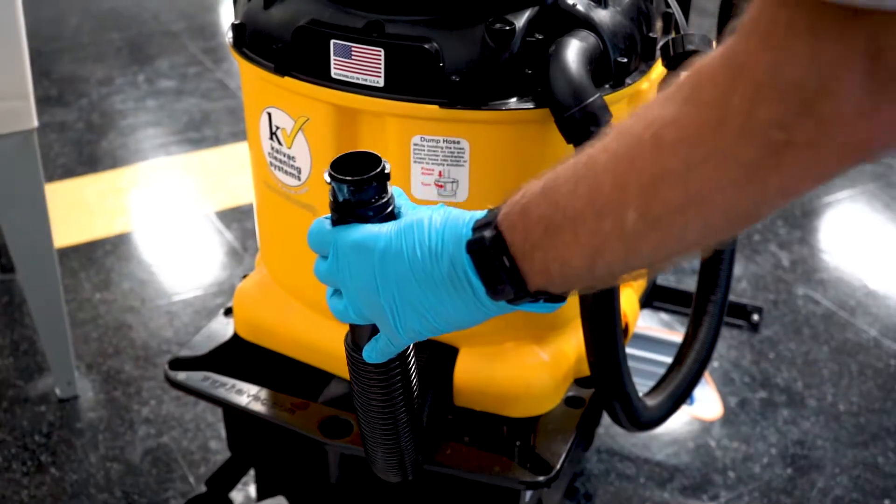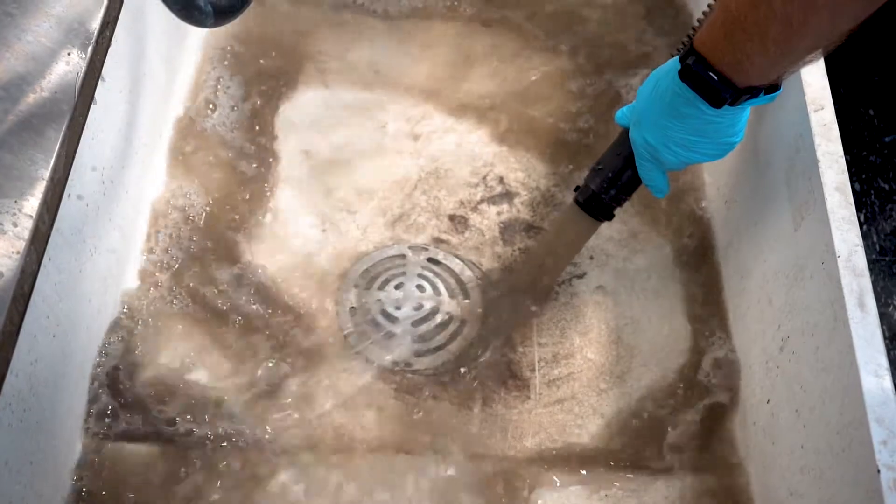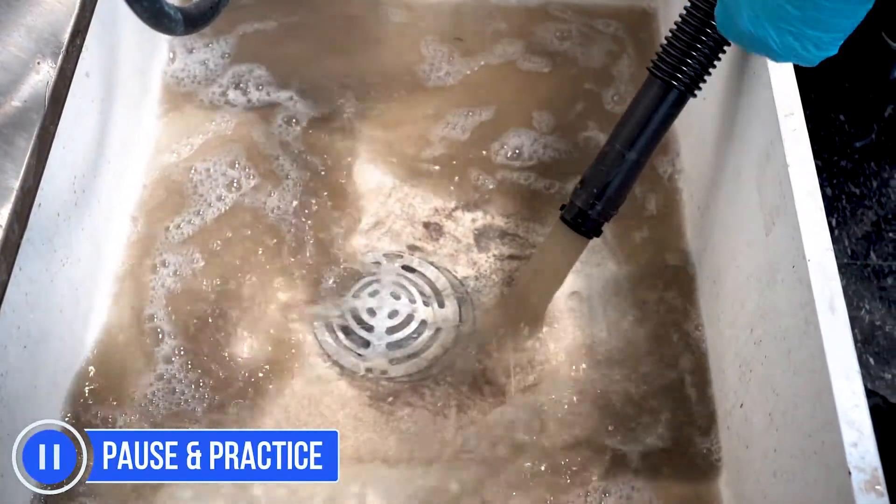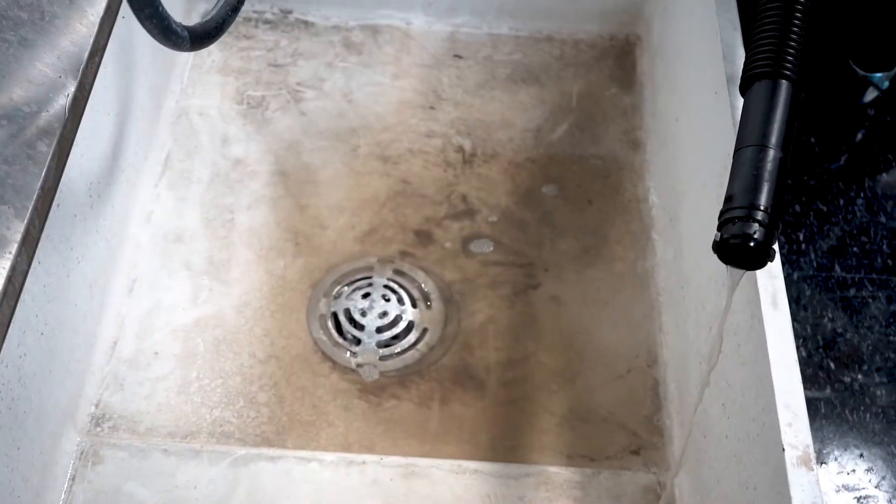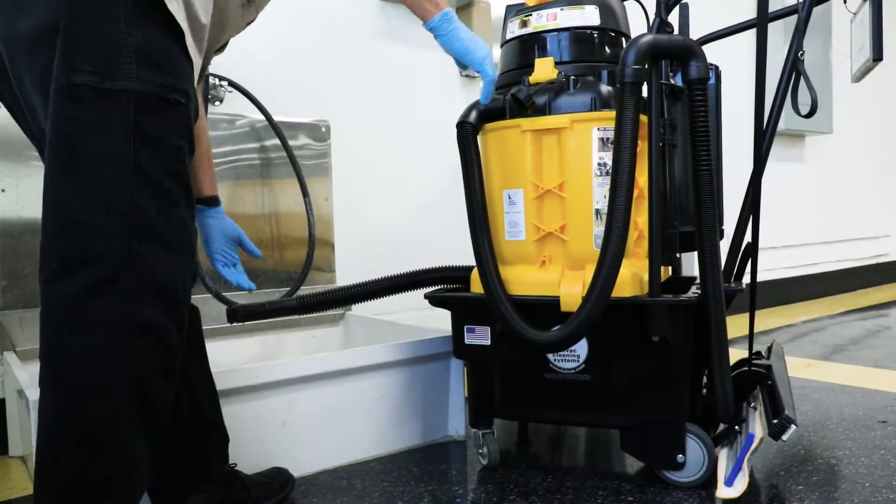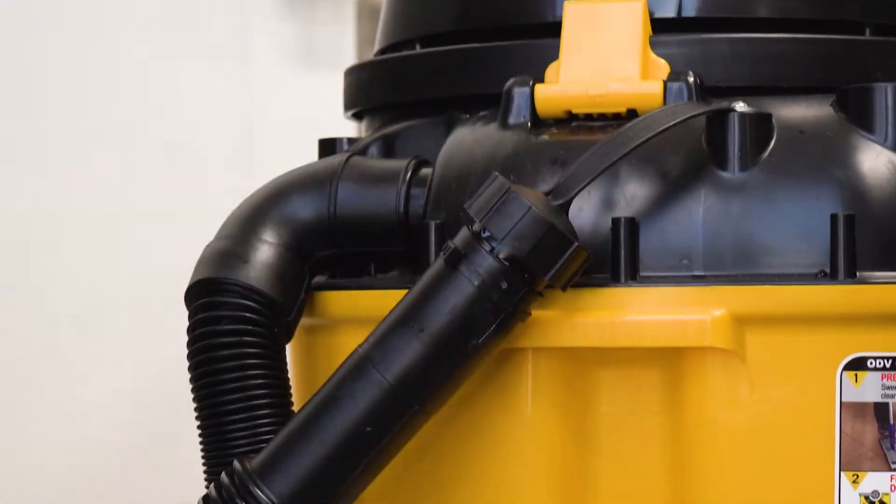Then quickly lower the dump hose into the sink, allowing the contents of the vacuum tank to drain out. When the vacuum tank is empty, lift the dump hose out of the floor sink and reattach it to the dump hose cap attached to the vacuum tank.